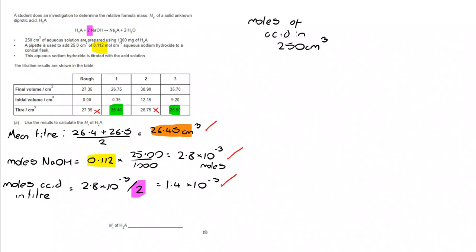From there, I can work out how many moles there were in 250 cm cubed. I'm going to do that by dividing by 26.45 cm cubed and multiply by 250.